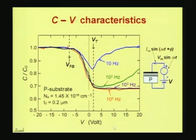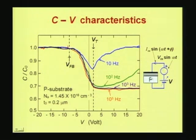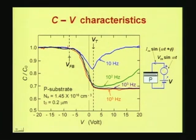You also have the biasing arrangement under which the capacitance characteristics have been measured. There is a DC bias applied and a small sinusoidal signal superimposed on the DC bias. The capacitor is a two-terminal device. The structure consists of a semiconductor — in this particular example it is p-type — then on the semiconductor you have a silicon dioxide layer shown by the hatched portion, and on top of that silicon dioxide layer you have a metal electrode.